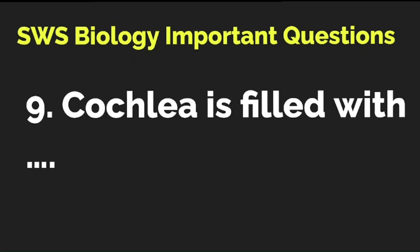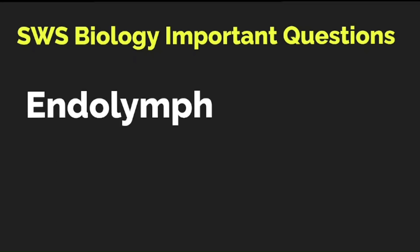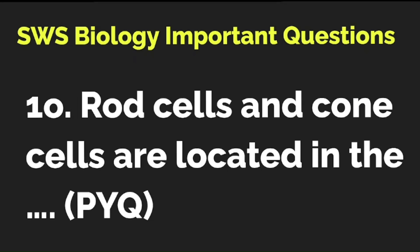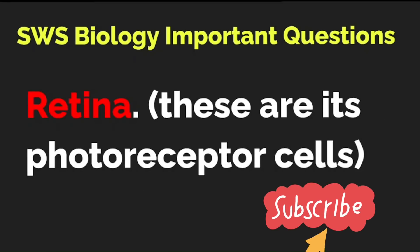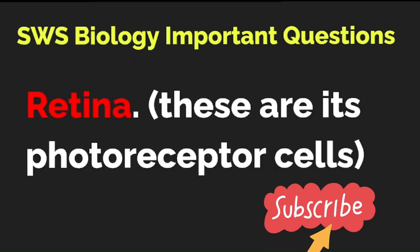The cochlea is filled with — one word answer — endolymph. This can come even in MCQ format with three other options. Rod cells and cone cells are located in the — this is also a previous year question — the retina, because these are its photoreceptor cells.